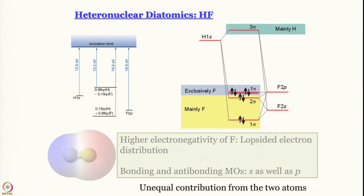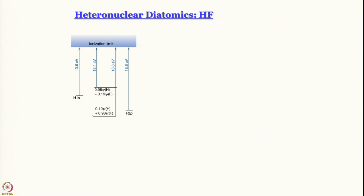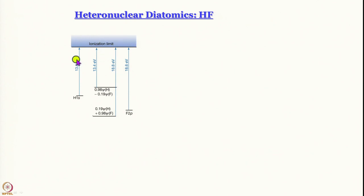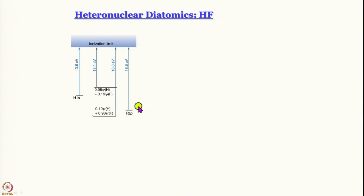The first heteronuclear diatomic molecule we want to talk about is hydrogen fluoride. I will take help of some experimental results from photo-ionization spectroscopy, which essentially measures ionization energy. Photo-ionization spectroscopy tells us that the ionization energy of hydrogen is 13.6 eV — we already know this number. For fluorine, the smallest ionization energy is 18.6 eV, which comes from the 2p orbital.